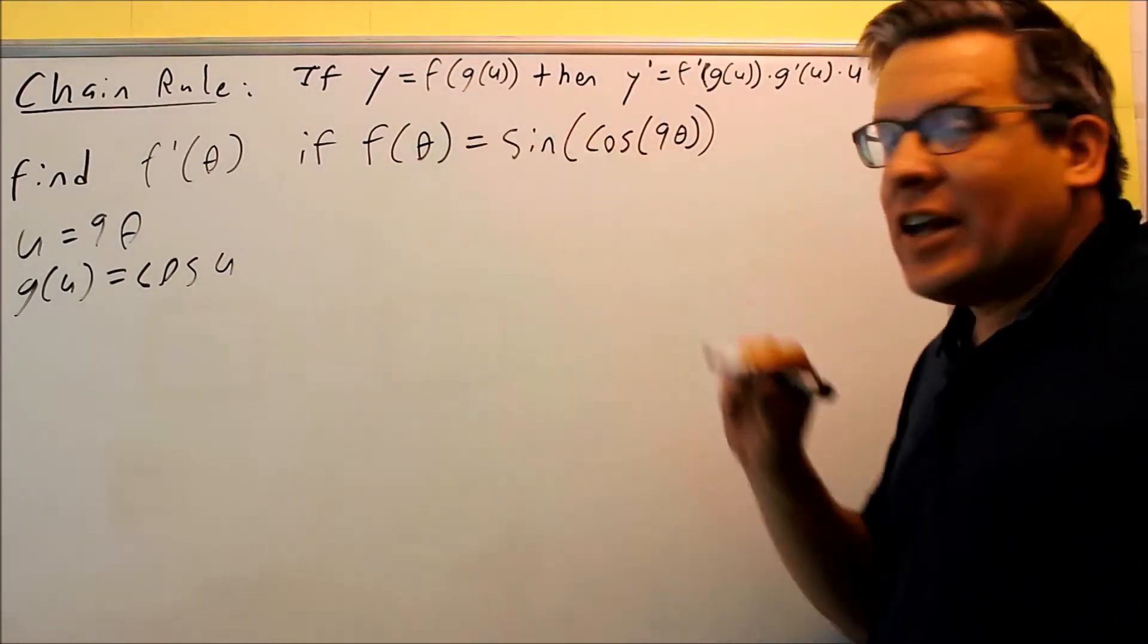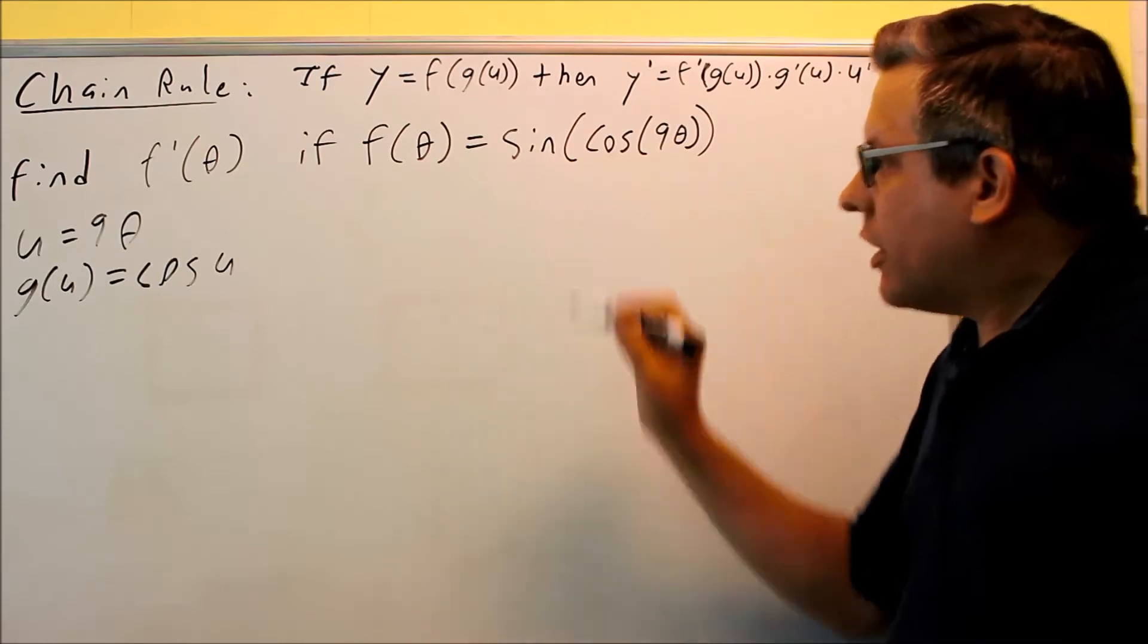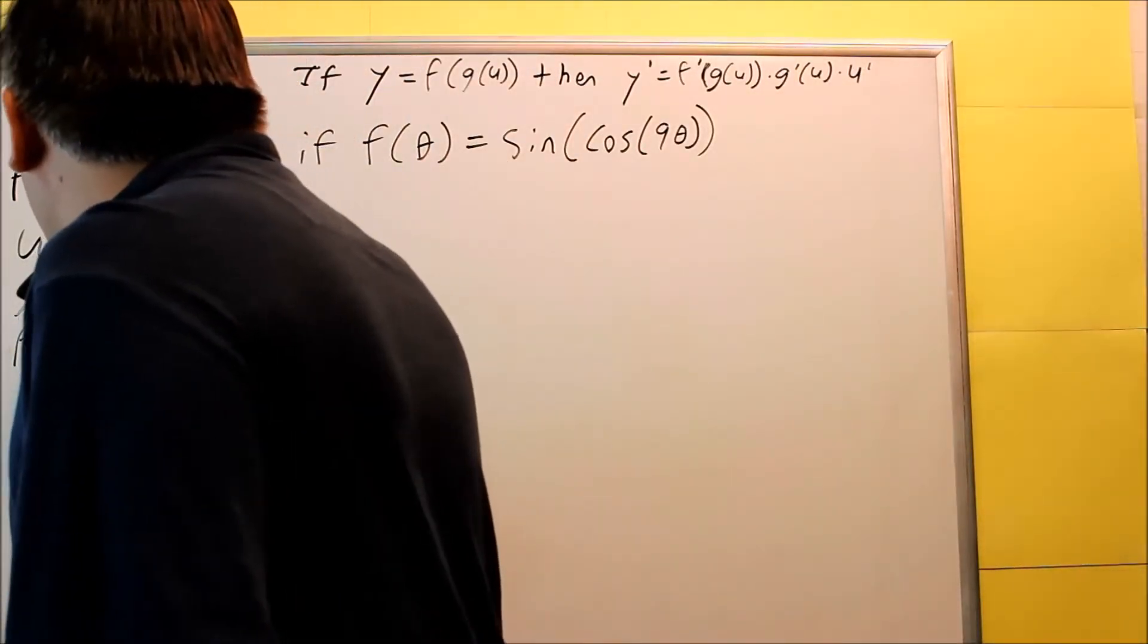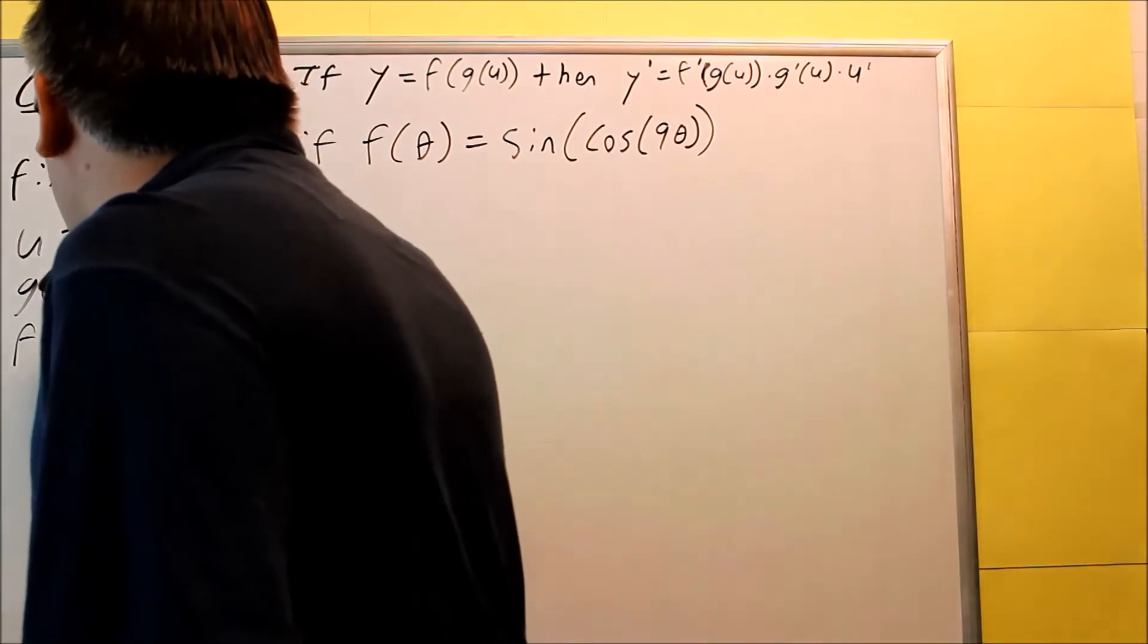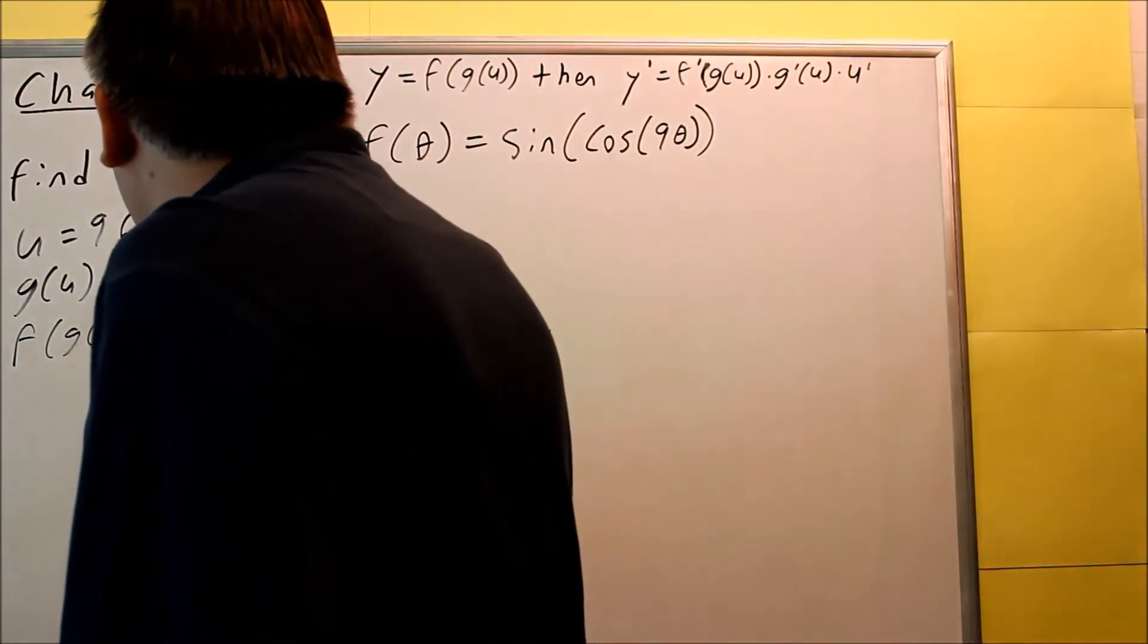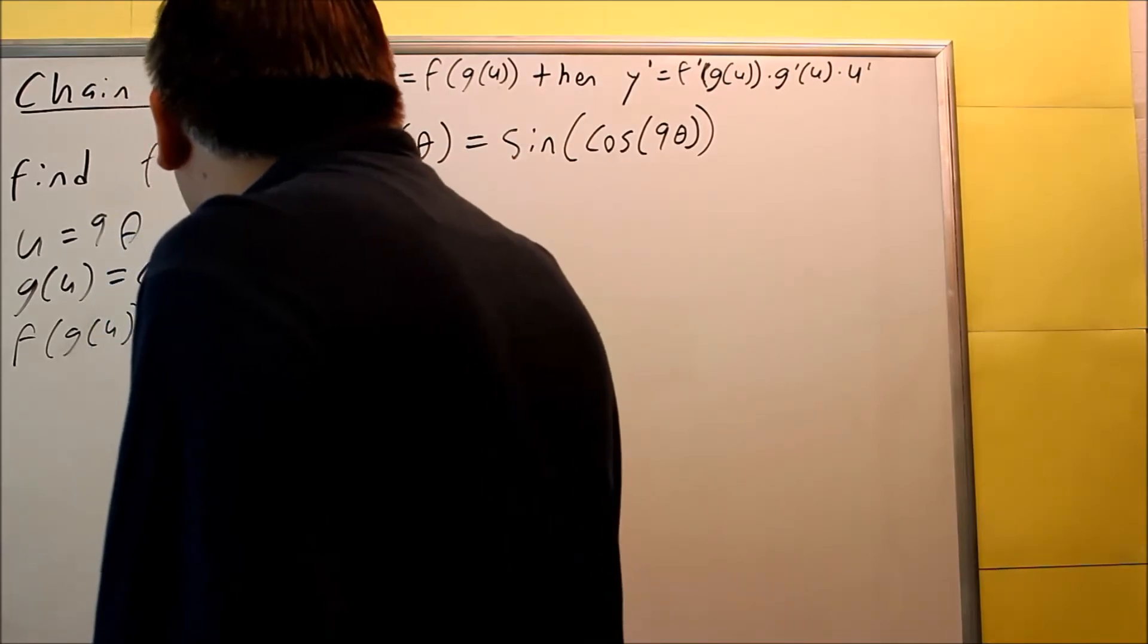Then, we want to identify the f. The f is going to be this one on the outside. It's going to be f of u, it's going to be f of g of u, I should say. It's going to be sine of cosine of u.